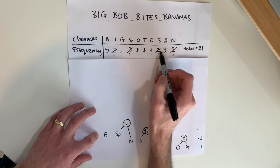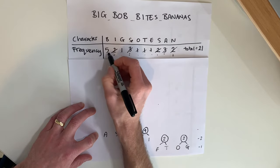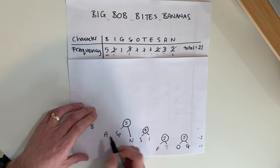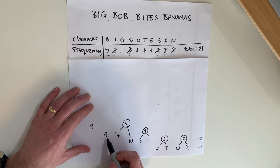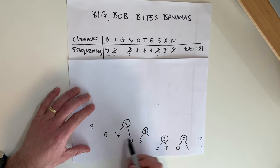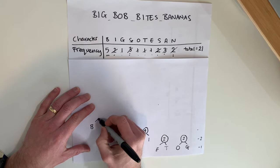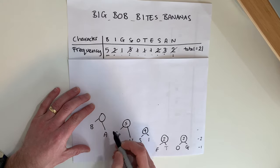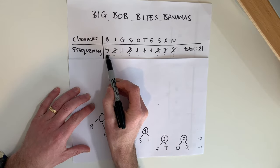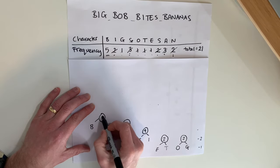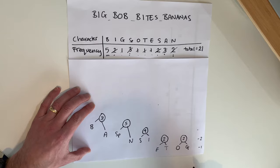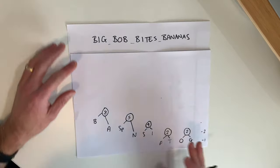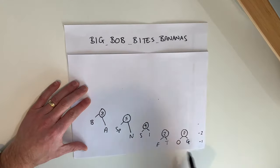The only character we haven't done yet is B, with a frequency of five, so I put B up here. Then I combine A and B together, which has a combined frequency of three plus five, which is eight.